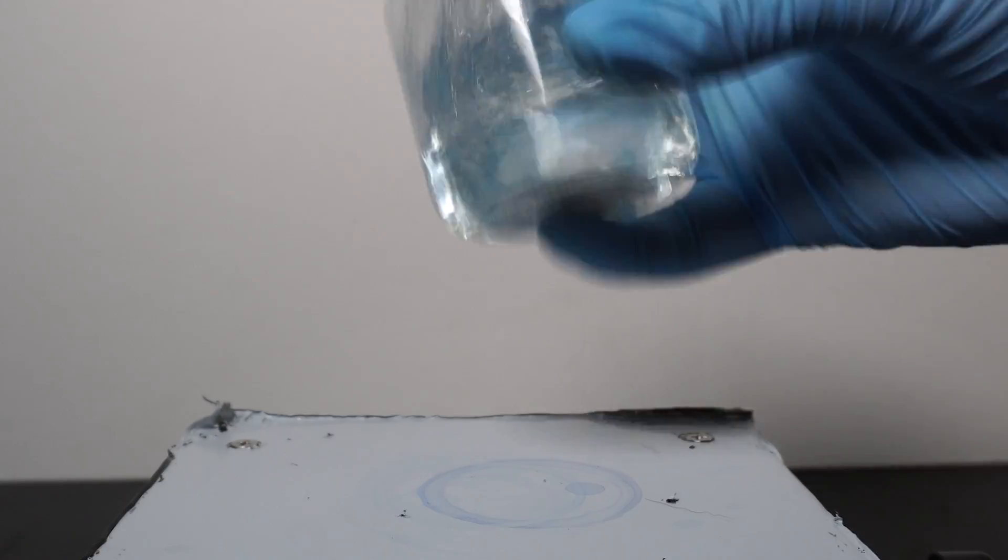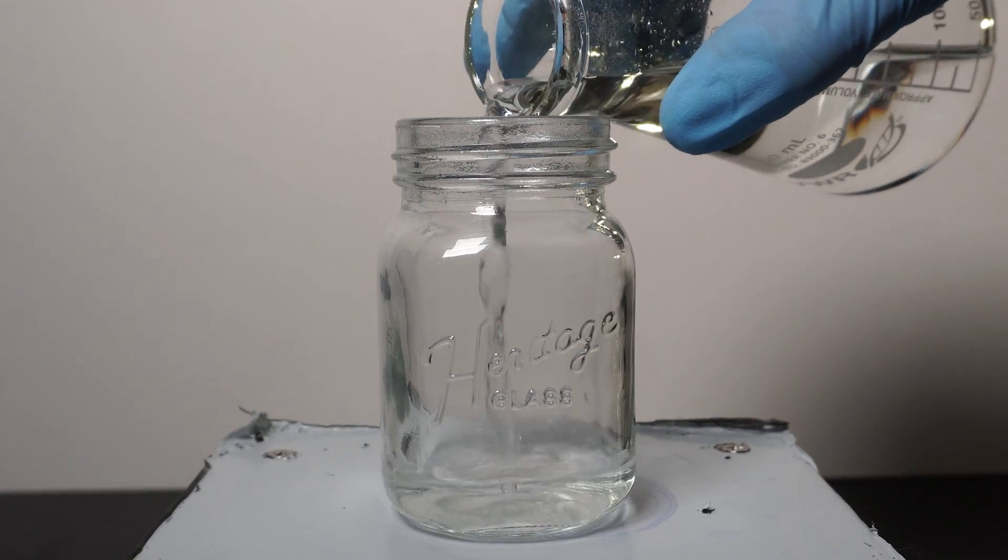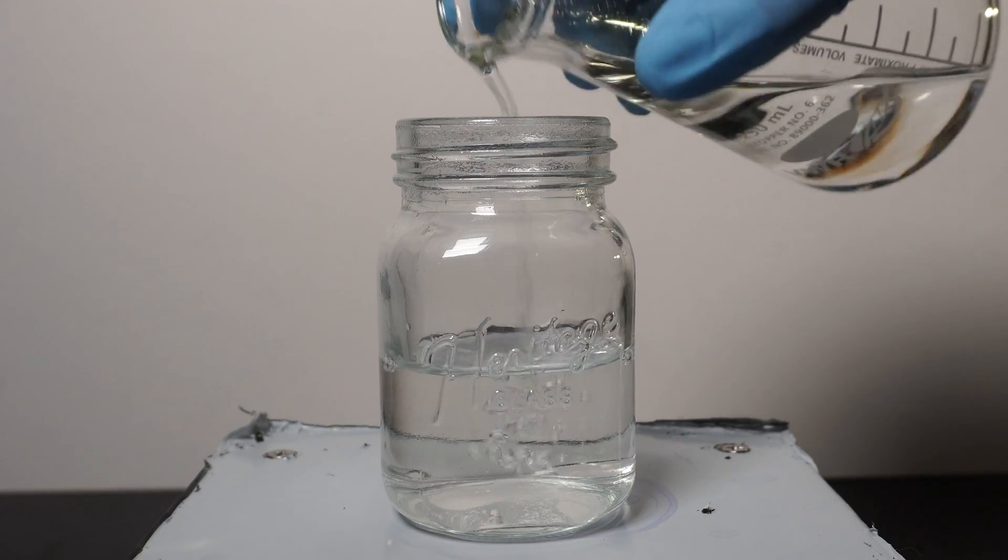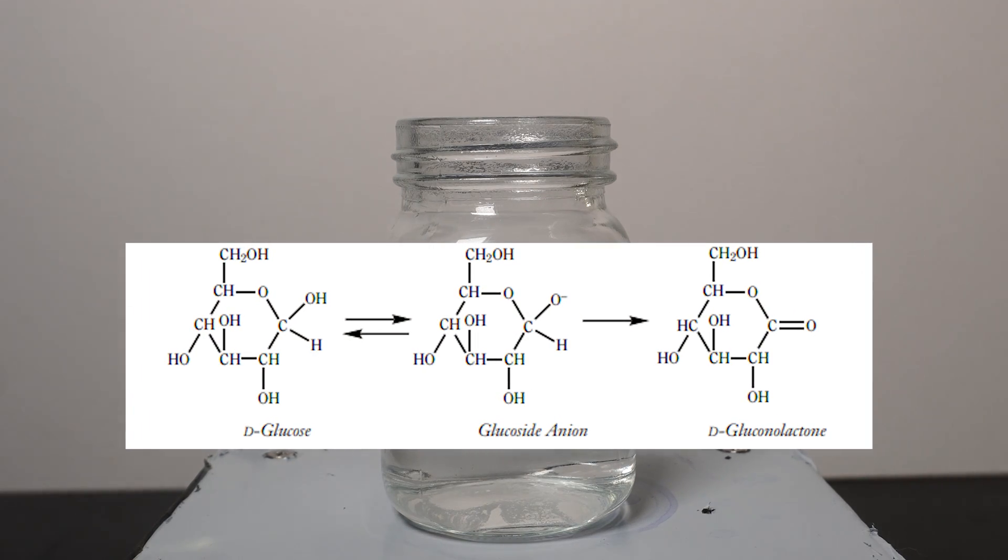So let's actually talk about what's going on here. We started with potassium hydroxide, glucose, and water. This is actually where the first reaction is taking place. The reaction is between the potassium hydroxide and glucose itself.